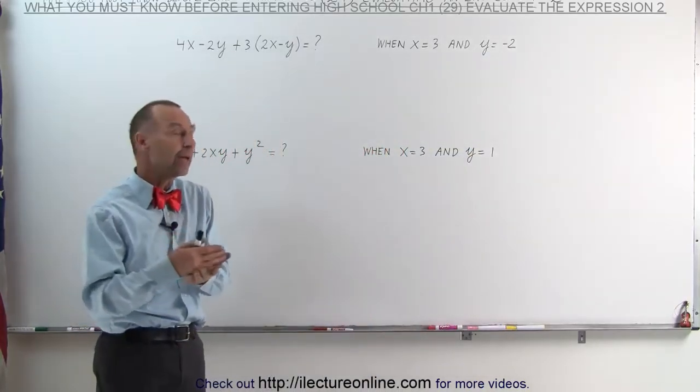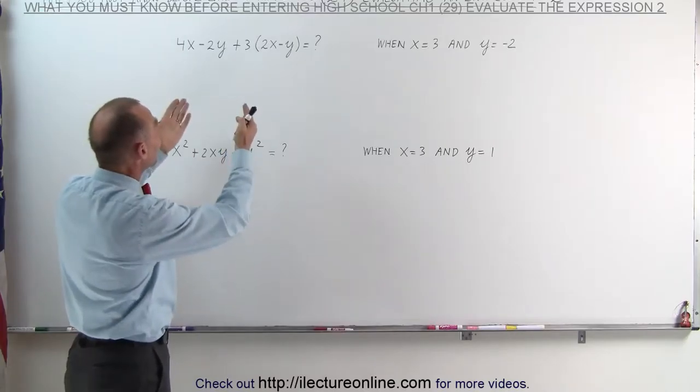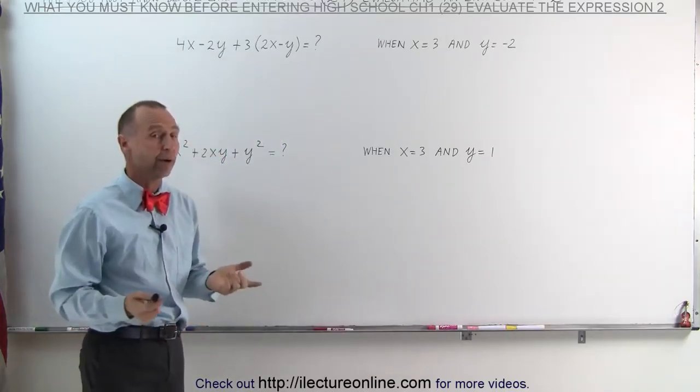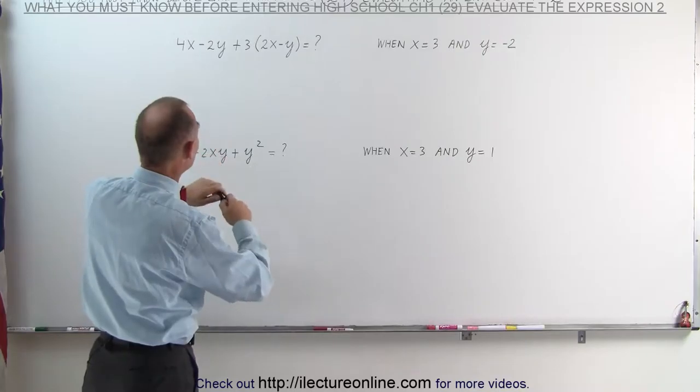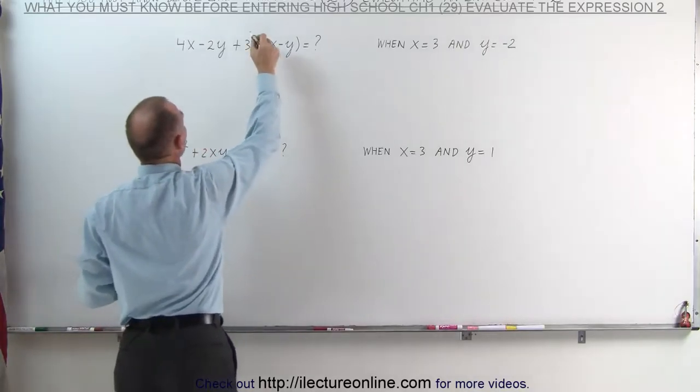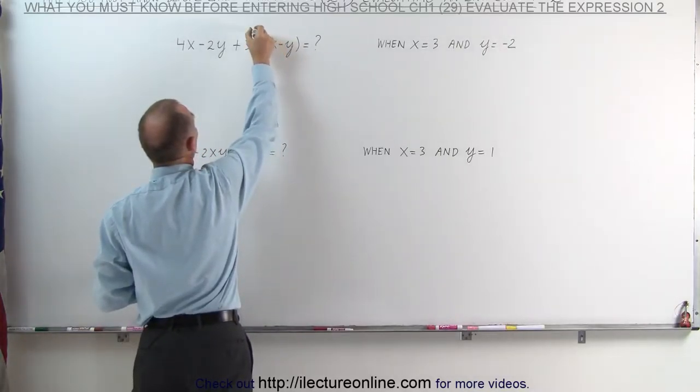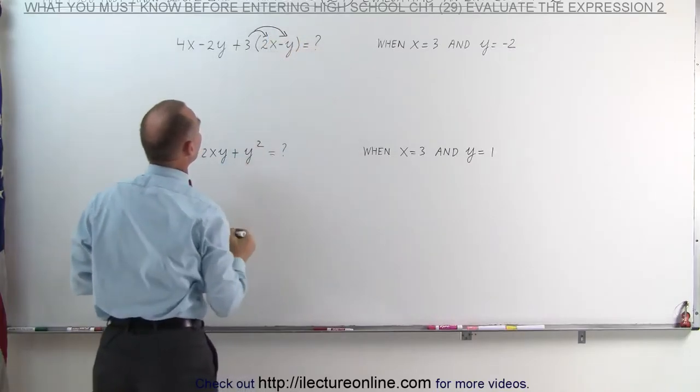But before we can evaluate it we should first get rid of the parentheses and then combine like terms if there are any. Let's go ahead and do that. The first step is let's get rid of the parentheses. That means we need to distribute the 3 on both terms inside the parentheses.